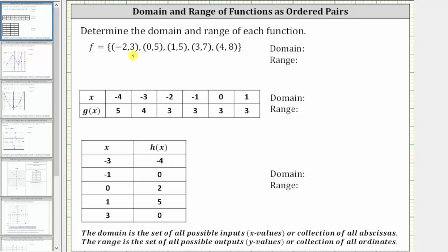Notice how the first function is given as a set of ordered pairs. Each ordered pair is in the form of x comma y, or the input comma the output. Which means the domain is negative two, zero, one, three, and four, and the range is three, five — notice how five occurs twice — seven and eight.